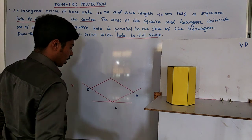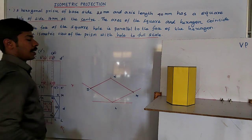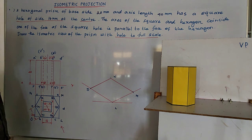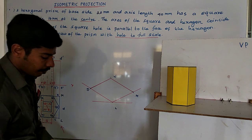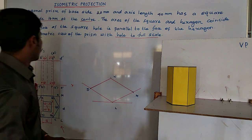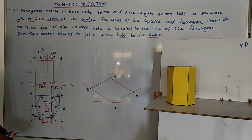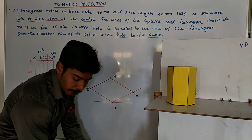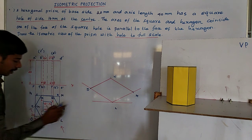So this is our L, M, N. We mark the bottom box. Similarly, we can mark the top box also. Bottom box is completed.